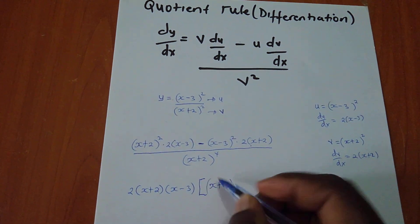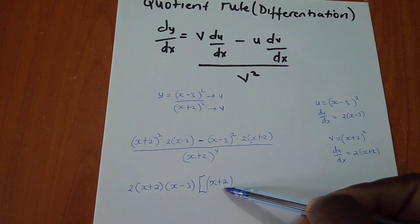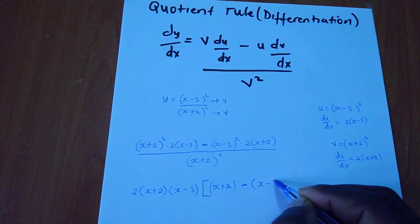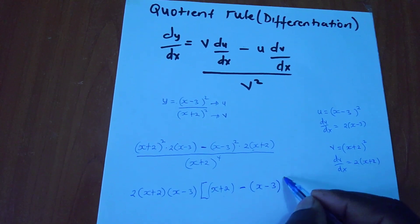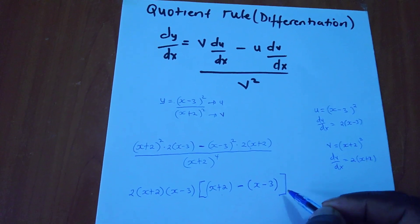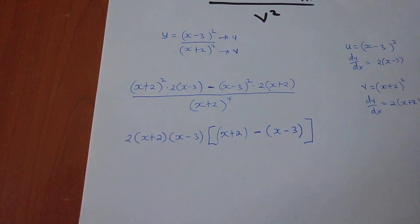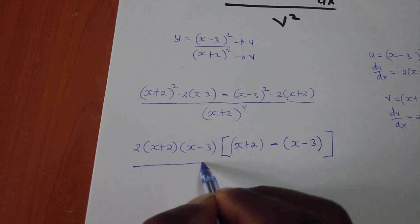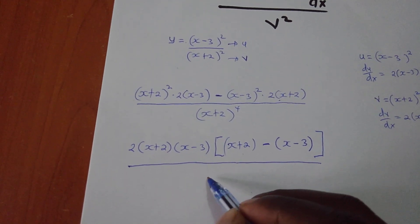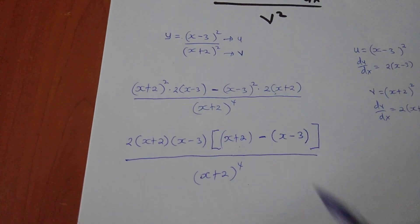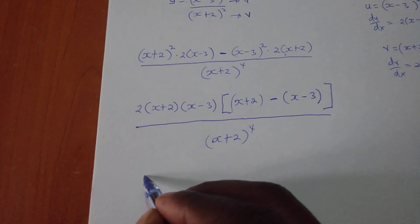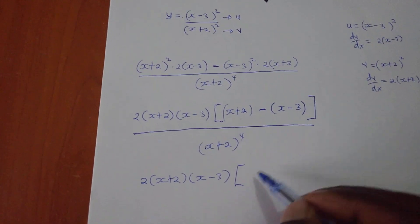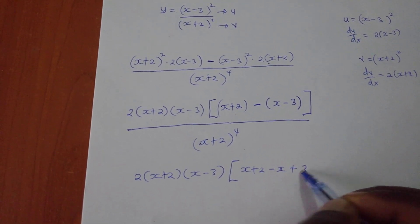In here I will remain with (x plus 2) - one went out and one stayed - then minus (x minus 3). Another one went out, so this is what I will have. Over the v squared, which is (x plus 2) to power 4. So I will have 2(x plus 2)(x minus 3), then solving this bracket: x plus 2 minus x plus 3. If a negative finds another negative in the bracket, it becomes a positive.